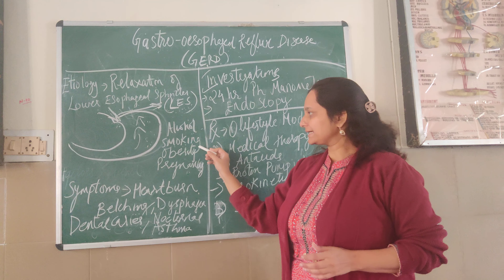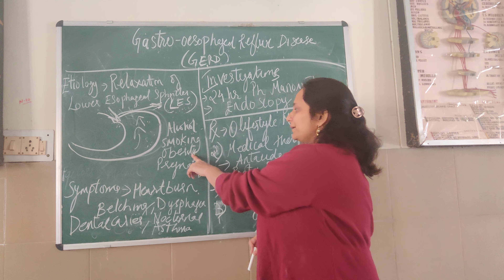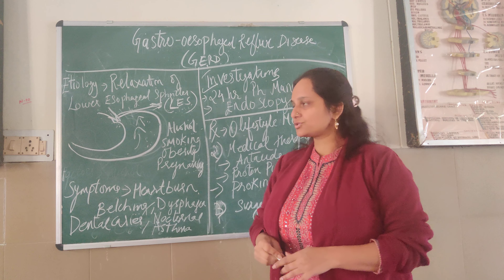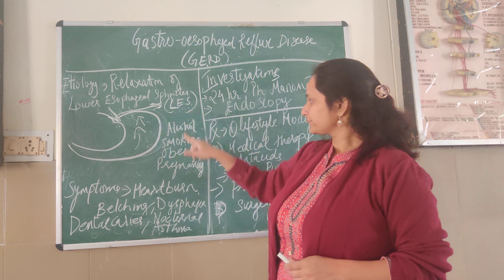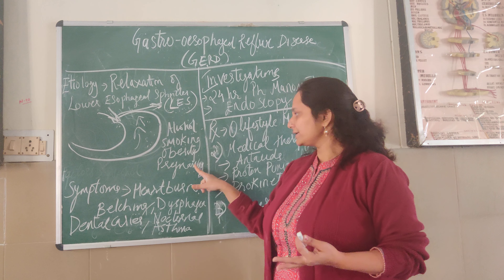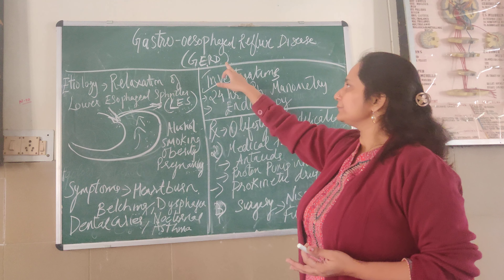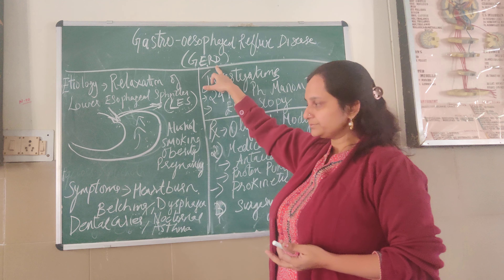Now the predisposing factors which lead to GERD: first is alcohol, second is smoking, third is obesity, and fourth is pregnancy. Alcohol and smoking, obesity, and pregnancy all decrease the tone of the lower esophageal sphincter. In obesity, there is also increased intra-abdominal pressure contributing to decreased tone. In pregnancy, hormones estrogen and progesterone also decrease the tone of the LES, ultimately leading to GERD.